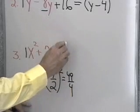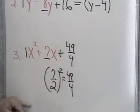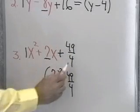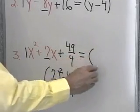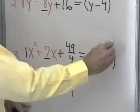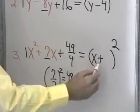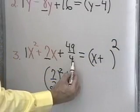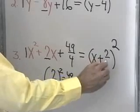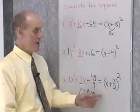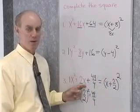So, if I add on here 49 fourths, I know I'm going to have a perfect square trinomial. What does it factor into? It factors, as all the rest of them have, into x plus — not 49 fourths, but 7 halves. So, x plus 7 halves, quantity squared, is this number right here.